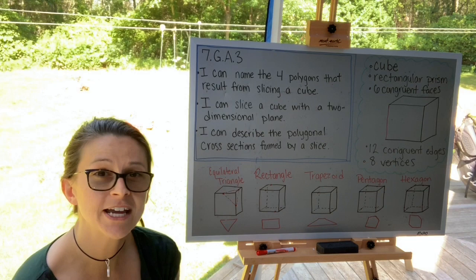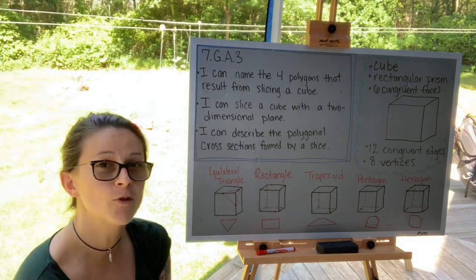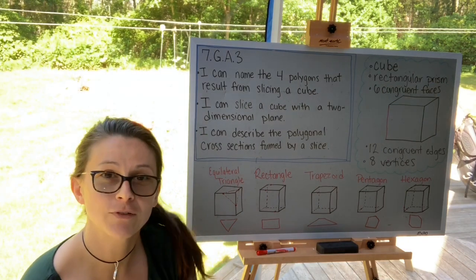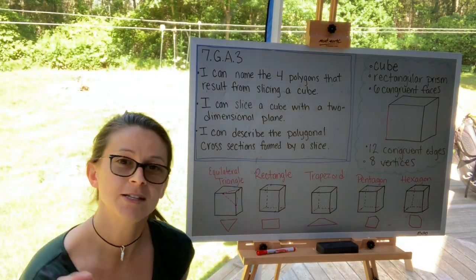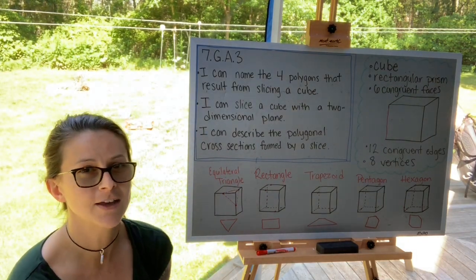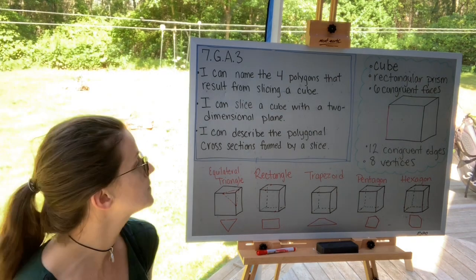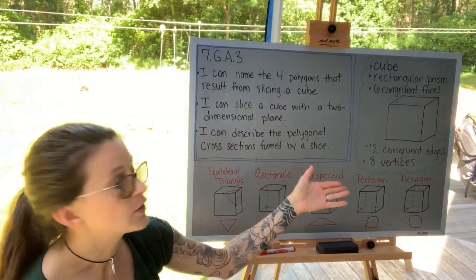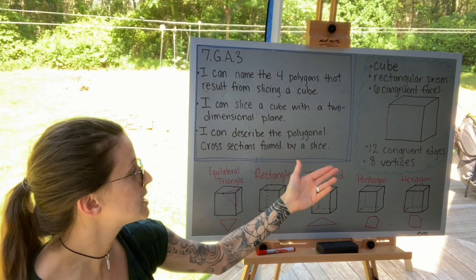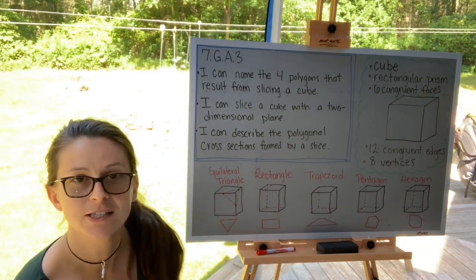There are important characteristics of a cube that help us understand why we can form these certain polygons. A cube is a rectangular prism — a special rectangular prism where all six faces are congruent squares. Every rectangular prism has six faces, 12 edges, and eight vertices.